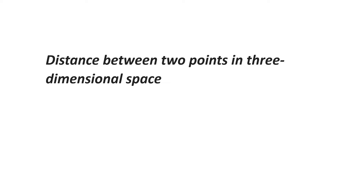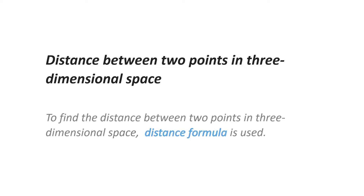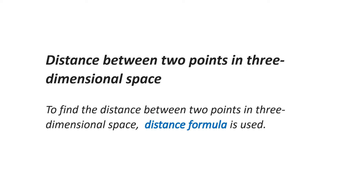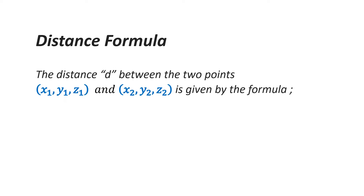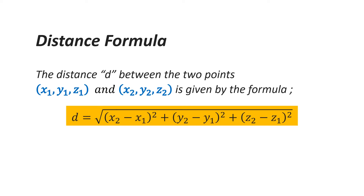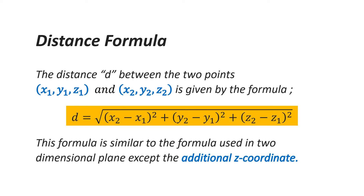Distance between two points in three-dimensional space: to find the distance, the distance formula is used. The distance d between two points (x1, y1, z1) and (x2, y2, z2) is given by: d equals the square root of (x2 minus x1) squared plus (y2 minus y1) squared plus (z2 minus z1) squared. This formula is similar to the two-dimensional distance formula, except for the additional z-coordinate term.